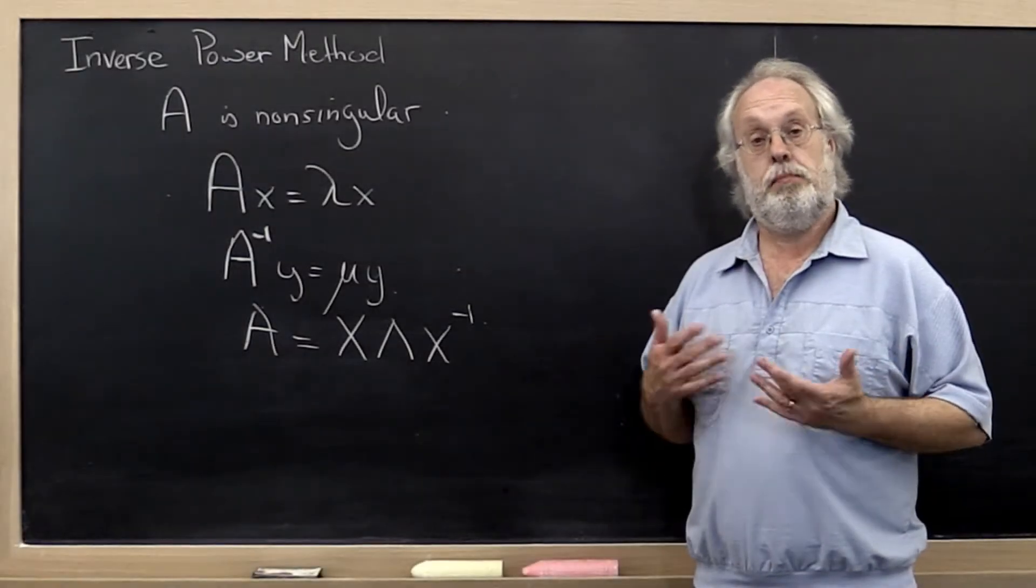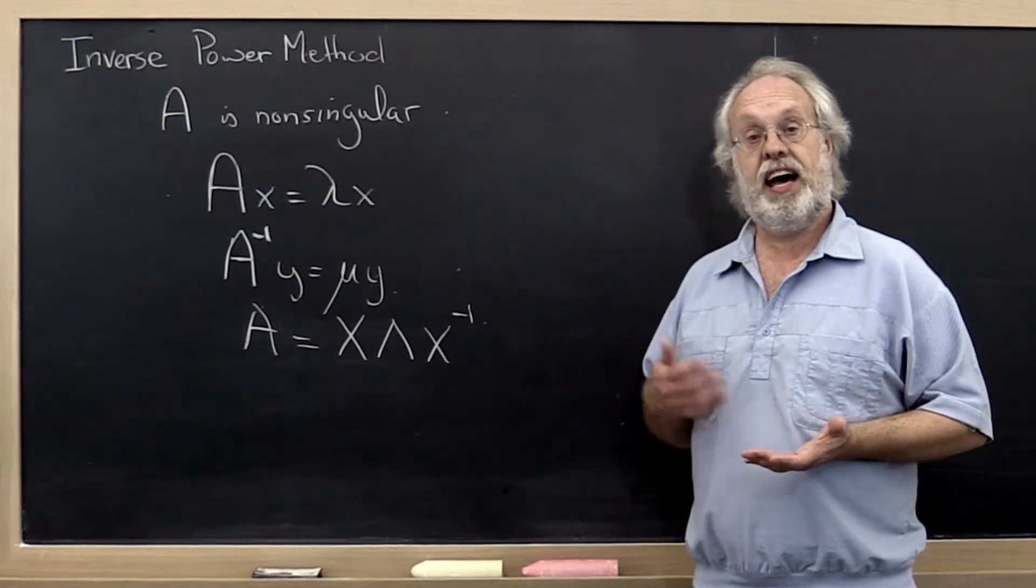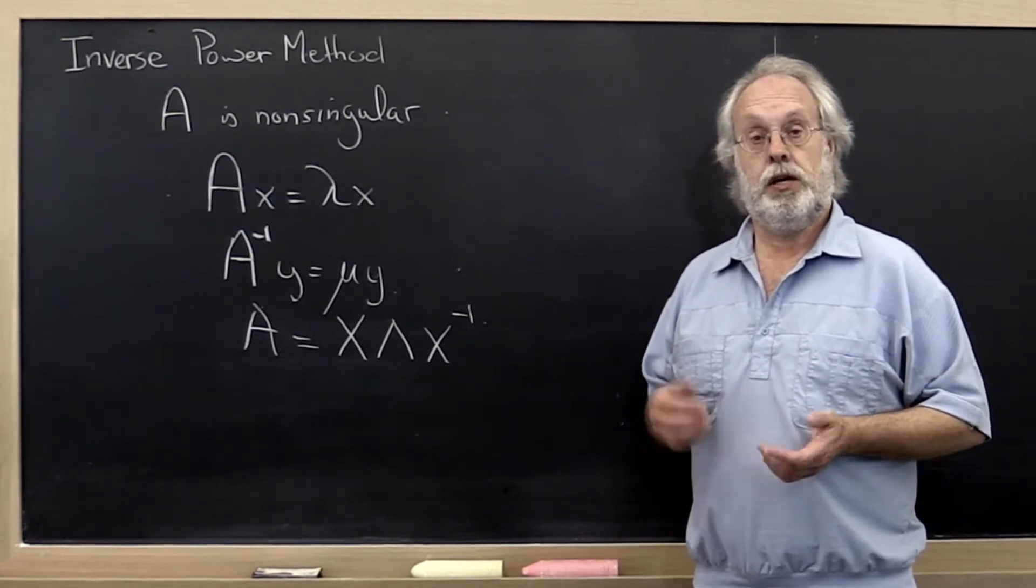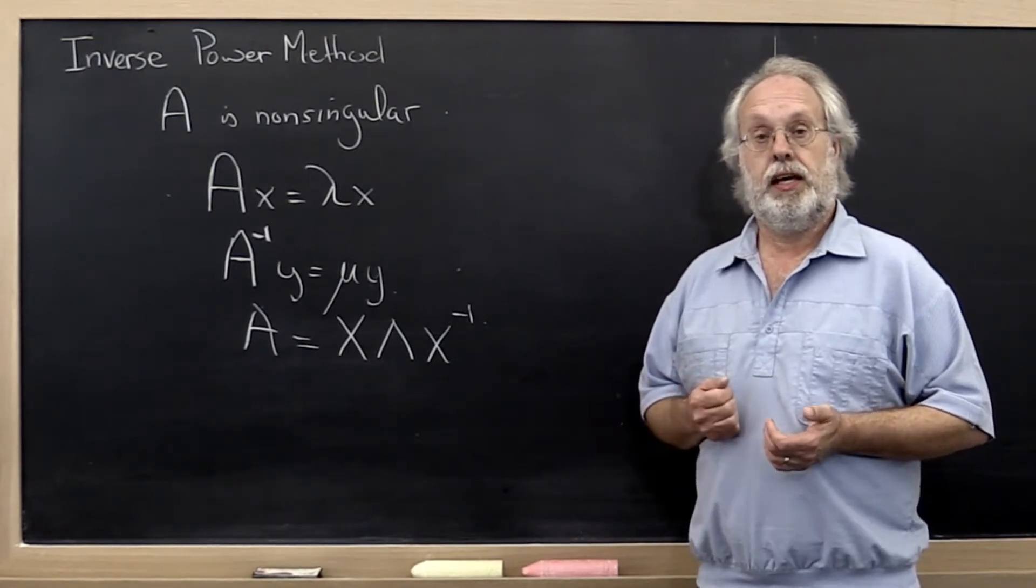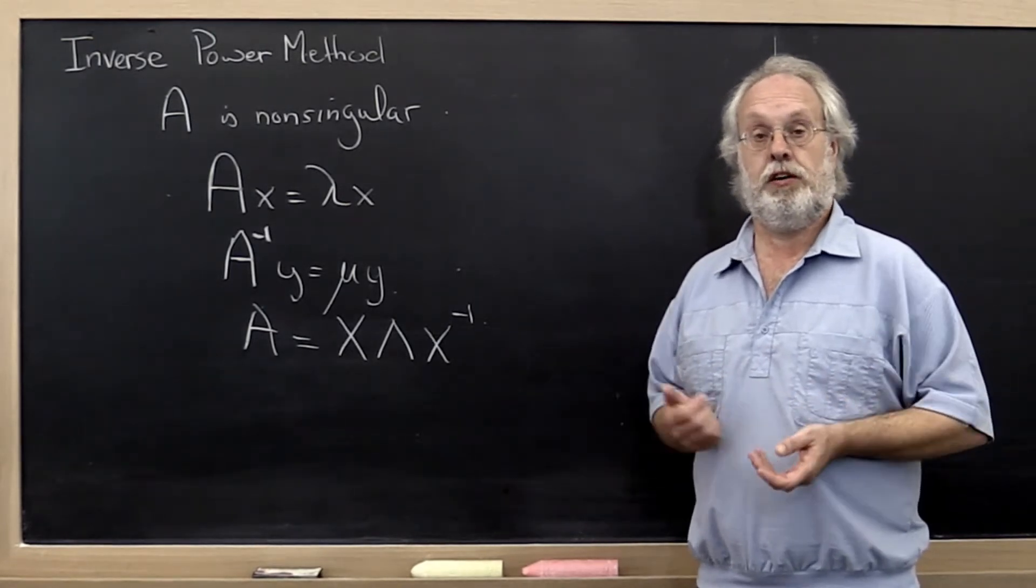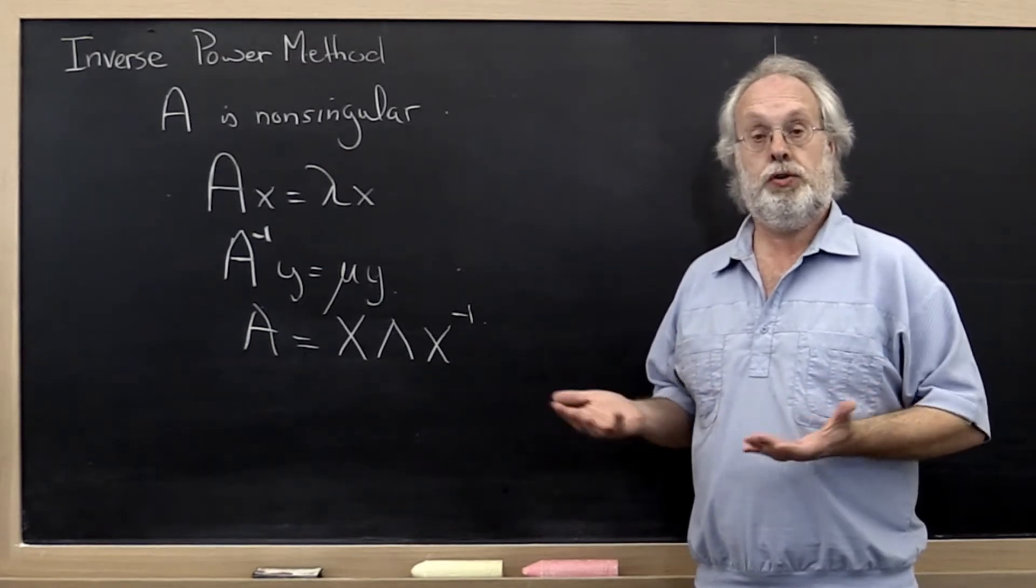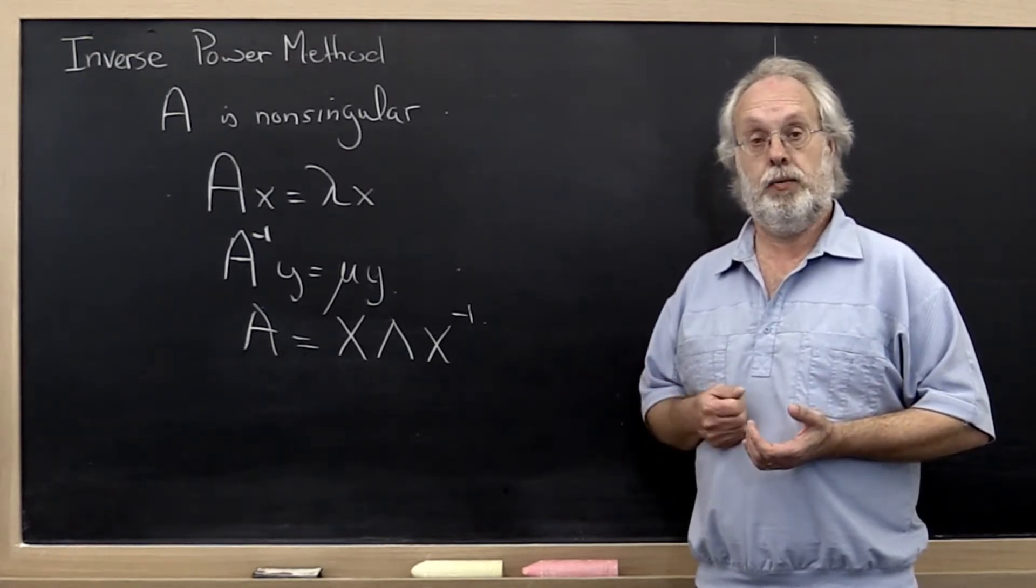What the power method gave us is a means by which to compute an eigenvector associated with the largest eigenvalue in magnitude. And then once we have an approximation for that vector, we can use the Rayleigh quotient to compute the eigenvalue itself.